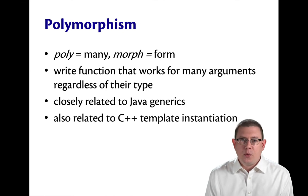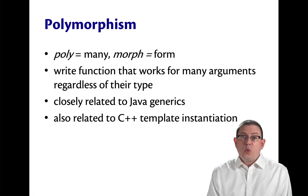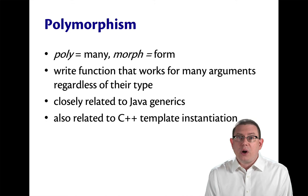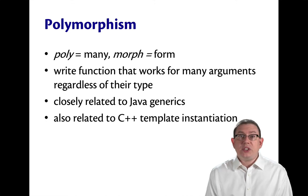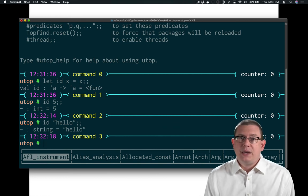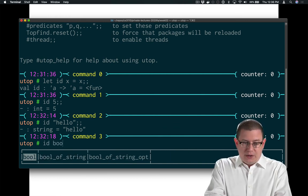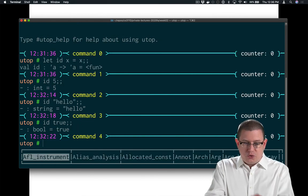This is a kind of polymorphism. Poly, of course, here means many and morph means form. It's a way of writing a function that works for many arguments regardless of their type. We saw that with the id function. It worked whether you passed an integer to it, or a string, or a boolean if you wanted, say as well, id true.